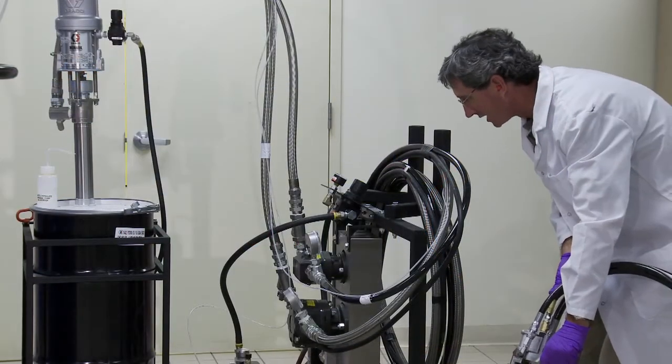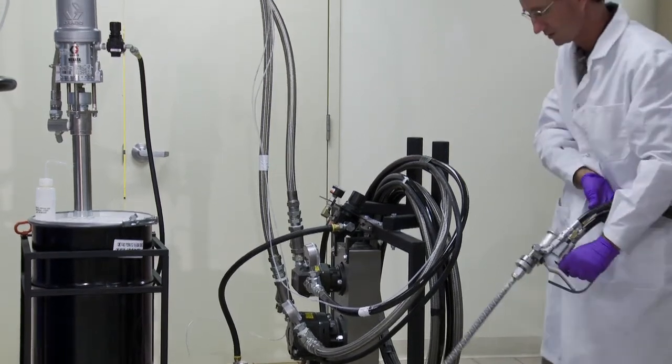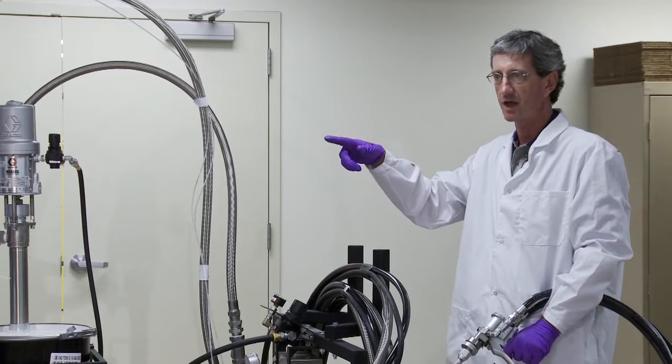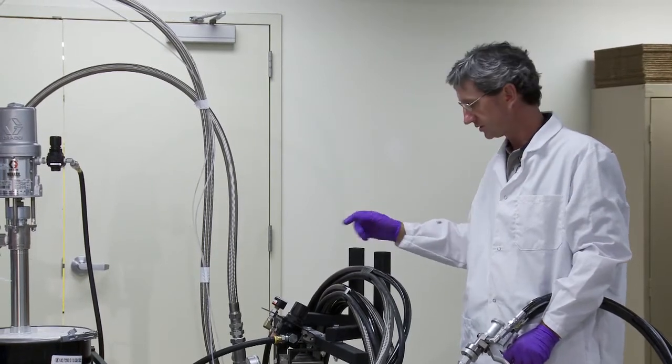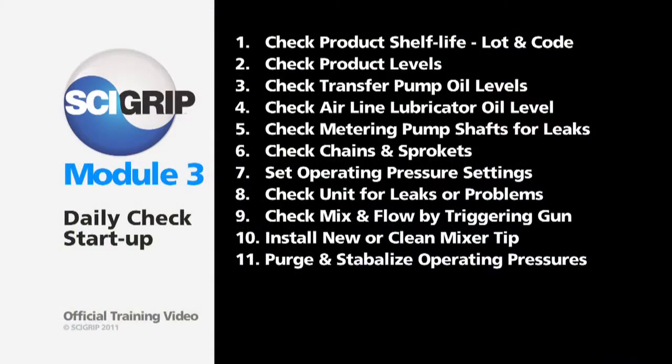My line pressures have all stabilized. So I'm finished purging because both of my transfer pumps have cycled normally through a full cycle, and my line pressures on both hoses have stabilized at a number within my normal operating range.